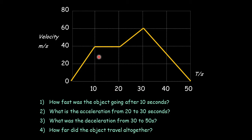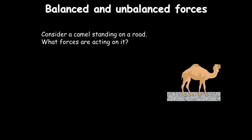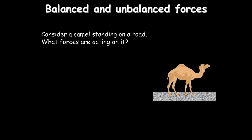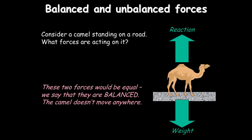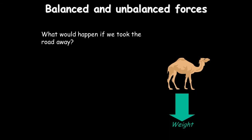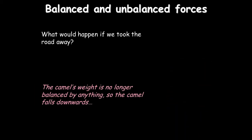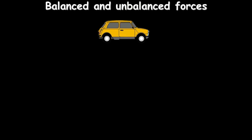How far did the object travel altogether? Work out the area under the graph — that only appears on a higher paper. Let's consider some forces. Take a camel standing on a road: everything on Earth has weight, a force acting downwards due to gravity. The road pushes back with a reaction force of equal size in the opposite direction, so the camel stays still. Remove the road and the camel would free fall downwards.